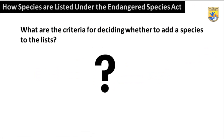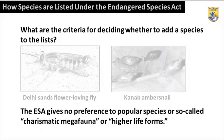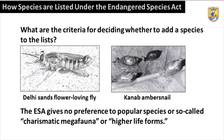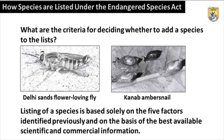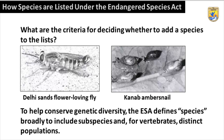What are the criteria for deciding whether to add a species to the lists? The ESA gives no preference to popular species or so-called charismatic megafauna or higher life forms. Listing of a species is based solely on the five factors identified previously and on the basis of the best available scientific and commercial information. To help conserve genetic diversity, the ESA defines species broadly to include subspecies and, for vertebrates, distinct populations.